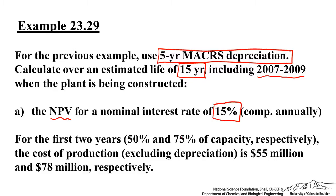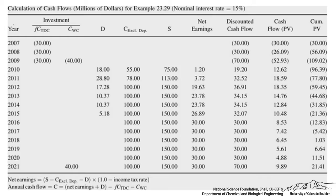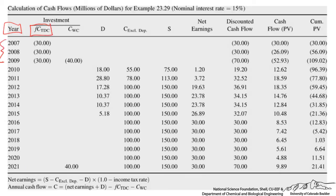For the first two years of operation, we're operating at 50% and 75% capacity, with cost of production excluding depreciation of $55 million and $78 million respectively, then rising to $100 million for the remaining years. The total depreciable capital is $90 million, sunk as $30 million each of the three construction years — shown in parentheses to indicate negative cash flow.